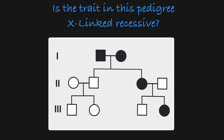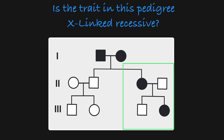Now let's take a look at this pedigree. Is the trait in this pedigree inherited in an X-linked recessive manner? Looking at this subfamily, we have an affected mother having an unaffected son. If this trait were inherited in an X-linked recessive manner, this mother would be homozygous recessive, and her son would have the recessive X-allele, making him affected. Because this female has an unaffected son, we know that the trait in this pedigree is not following an X-linked recessive mode of inheritance — it must be following a different mode of inheritance.